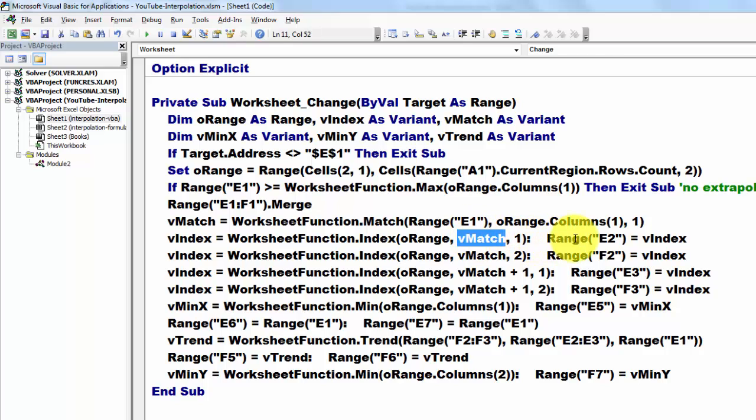Then we calculate the index value by using the INDEX function based on the V-match function, that is the row position. We put in range A2 the value of V-index. Then we recalculate V-index, this time for column 2, and put that in range F2. Then we do something similar for the third cell, match plus 1, and again match plus 1 but now in column 2.